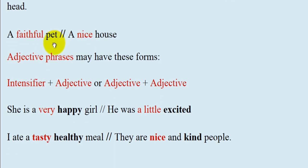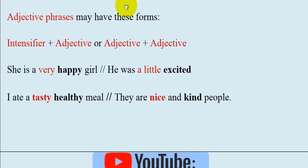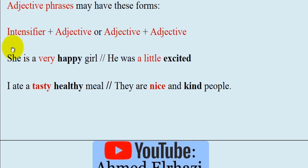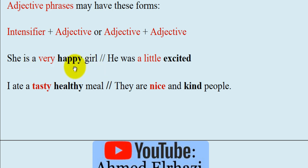Examples: a fateful pit, a nice house. Adjective phrases might have these forms. First, intensifier plus adjective. For example: she is a very happy girl. So 'very' is an intensifier plus adjective, making 'very happy' an adjective phrase. 'Girl' is the head noun in the sentence.